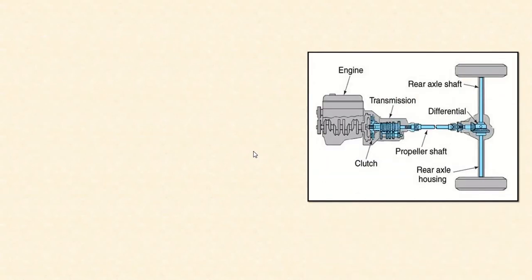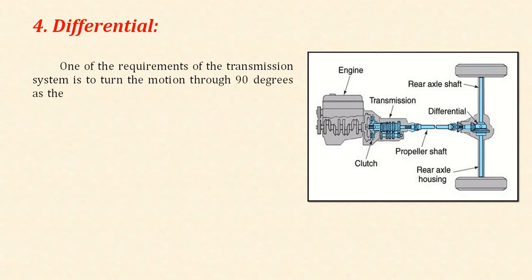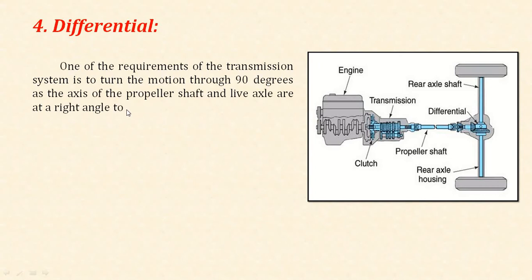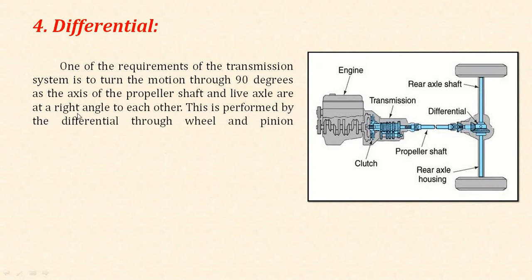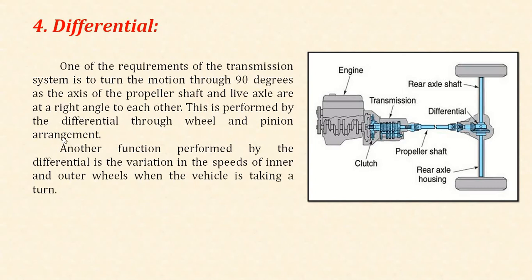The propeller shaft is absent in a front engine front wheel drive. The next component is the differential. One requirement of the transmission system is to turn the motion through 90 degrees, as the axis of the propeller shaft and the live axle are at right angles to each other. This is performed by the differential through the wheel and pinion arrangement. Another function of the differential is the variation in speeds of the inner and outer wheel when the vehicle is taking a turn. The torque from the propeller shaft is transmitted to the rear axle at 90 degrees.